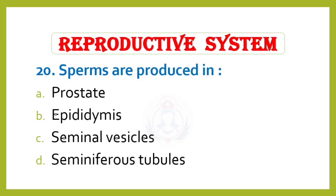Question 20. Sperms are produced in: Option A – Prostate, Option B – Epididymis, Option C – Seminal vesicles, Option D – Seminiferous tubules. Correct answer is Option D: Seminiferous tubules.